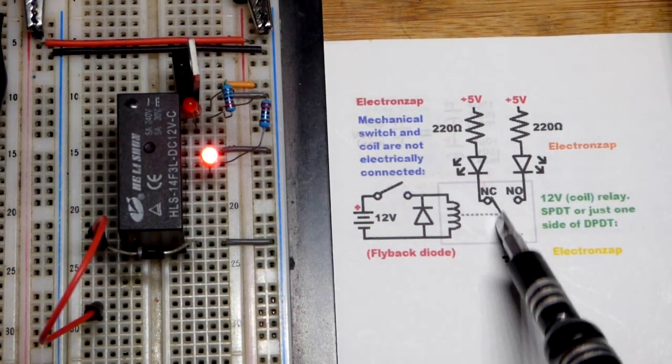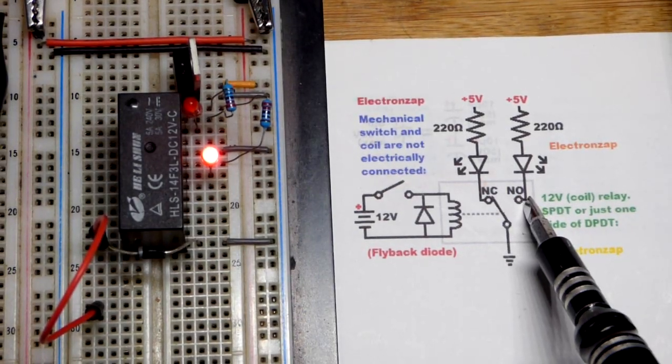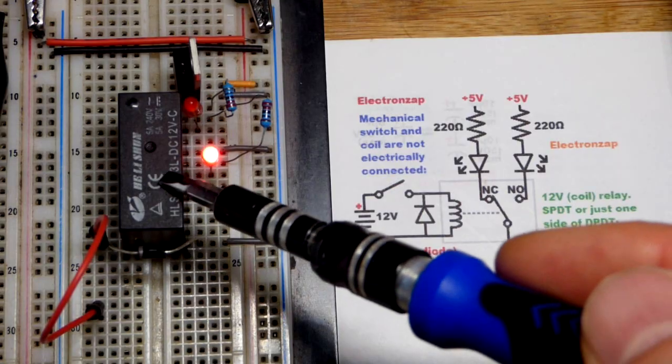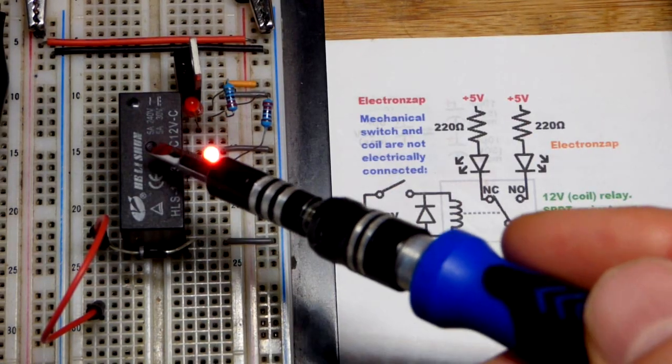So now we're going to look at another single pole double throw switch. This is actually an electromechanical relay right there.